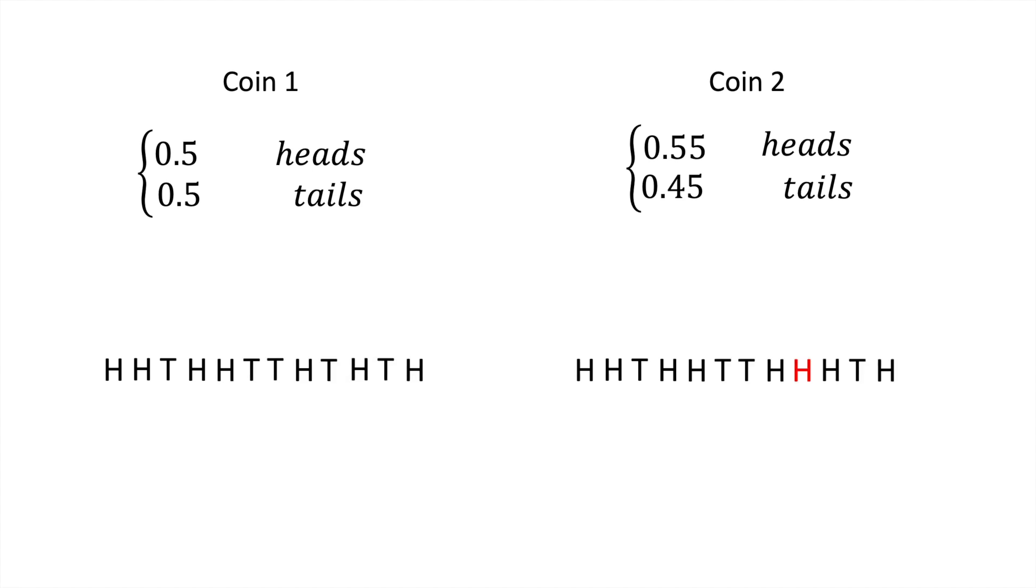However, if p was 0.95, then differentiating between the two coins would be quite simple and could be done in merely a few coin flips.